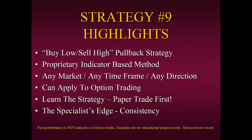This is strategy number nine, one of our most consistent as well as popular pullback methods. It's designed to buy low in overall uptrends and to sell high in overall downtrends. It's a proprietary indicator-based method — the signals are generated by applying these proprietary indicators. We're not looking at patterns, support and resistance, or Fibonacci retracements. It's simply based off two proprietary indicators. The beauty of strategy number nine is that you can apply it to any market, any timeframe, and any direction. It will generate signals in all markets, all timeframes, and all directions.